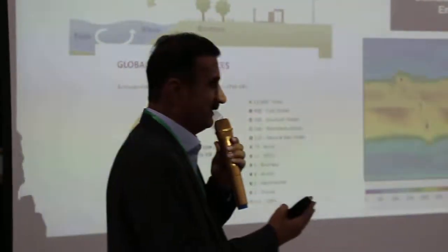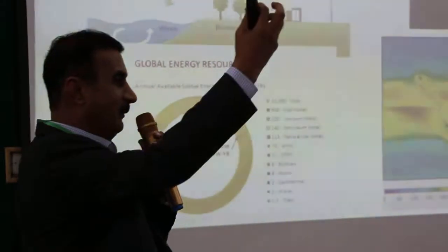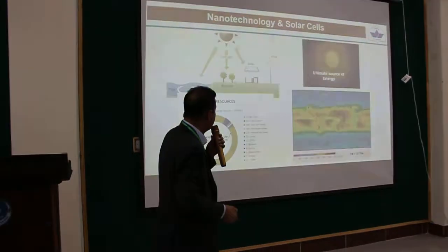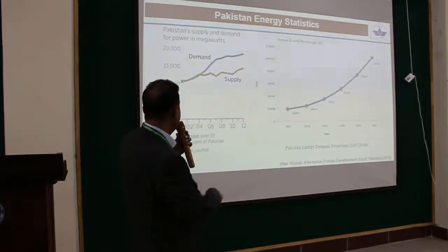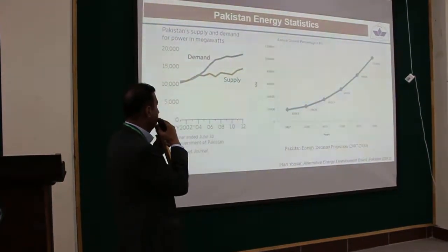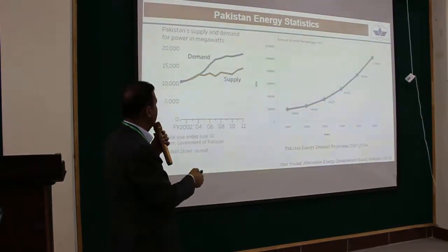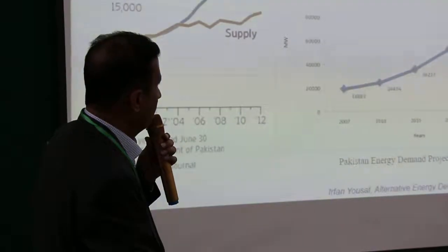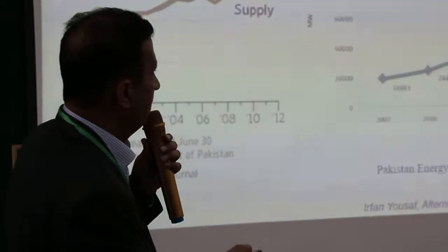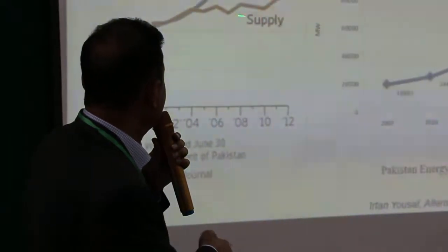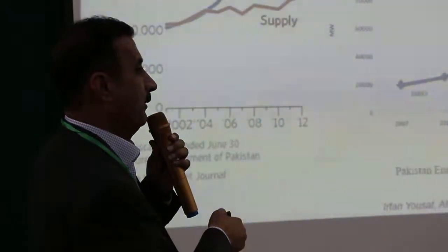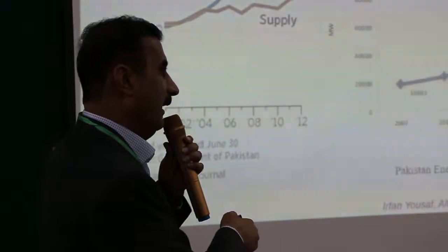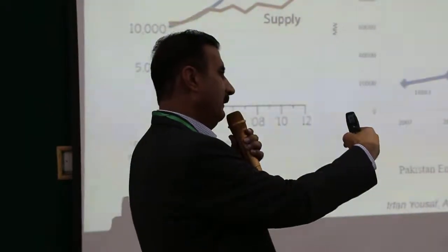The problem is we cannot really harvest the energy coming from the sun at the moment. From a Pakistan perspective, if the annual growth rate is 80% by 2030, we will have a very high energy demand. There is a huge and increasing gap between energy supply and energy demand, despite this region being one of the best for harvesting sunlight.